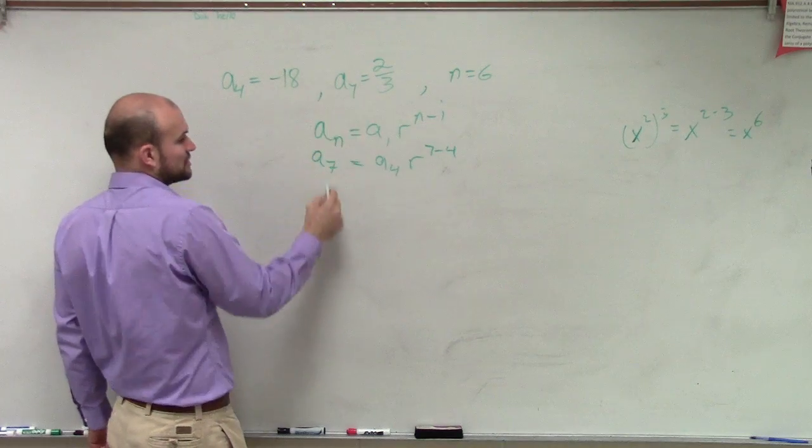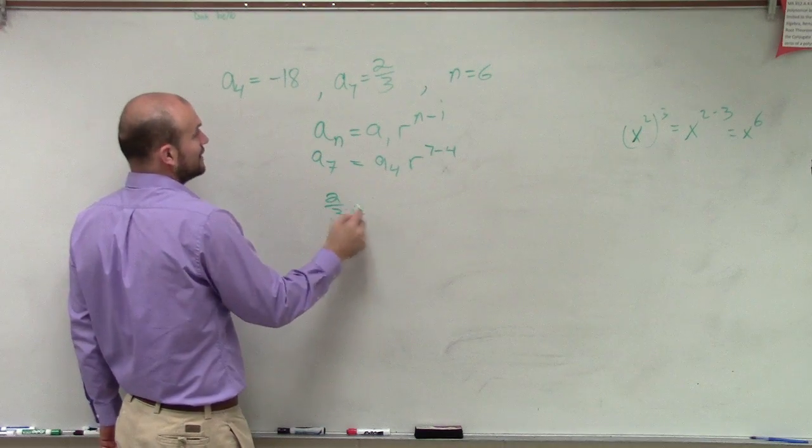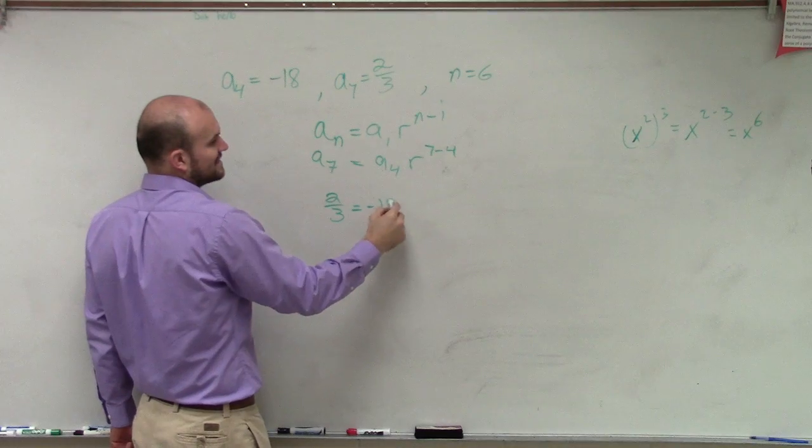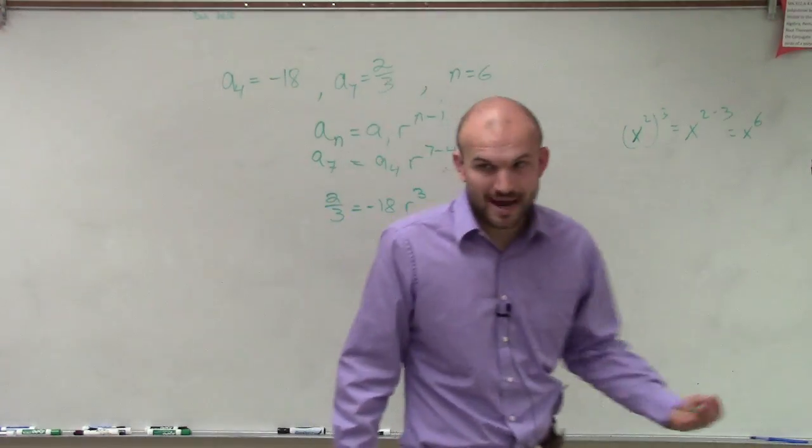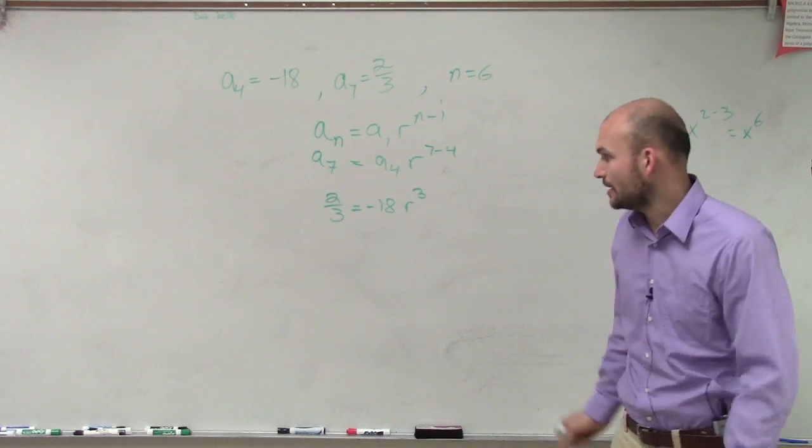So therefore I have a sub 7, which is 2/3, equals a sub 4, which is negative 18, times r to the third power. Now do I have an equation that I can solve for r? Yes, alright.